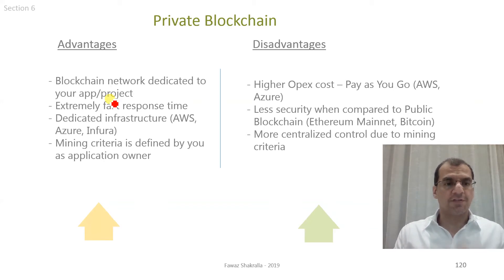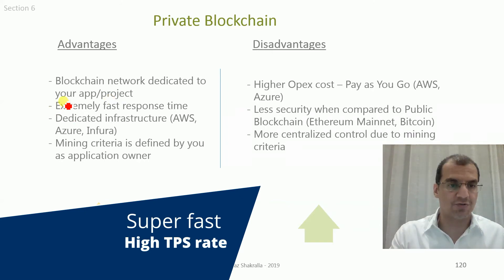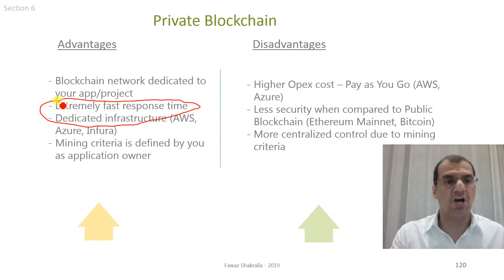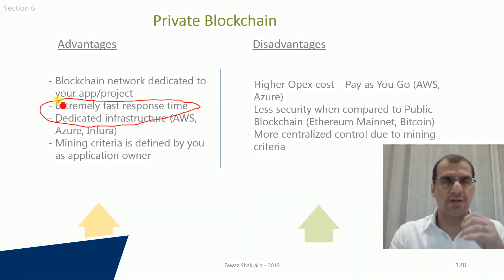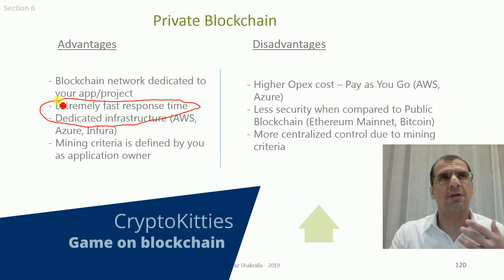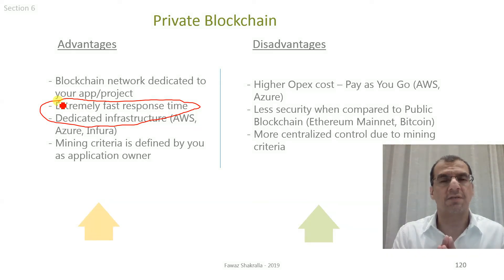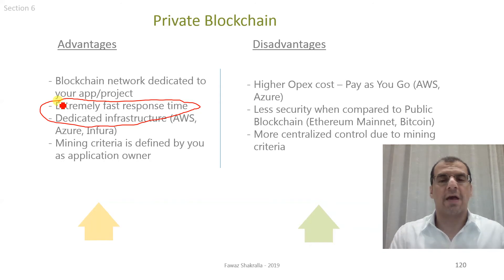The second advantage is extremely fast response time. Your transactions per second are going to be very fast because it's a dedicated blockchain infrastructure for your app — it does not contain transactions from other applications. For example, in 2018 on the Ethereum mainnet, two developers from Scandinavia deployed a game called CryptoKitties. It went viral like wildfire and became hugely popular.